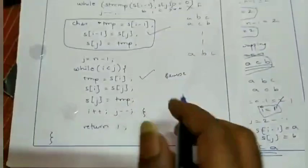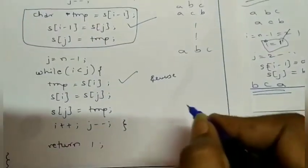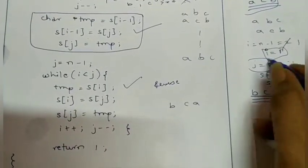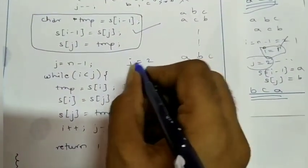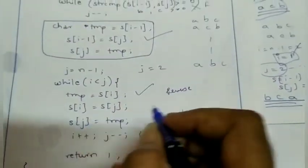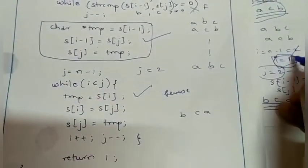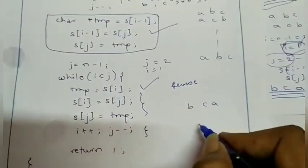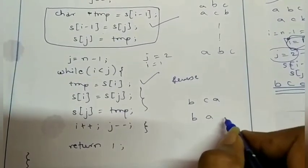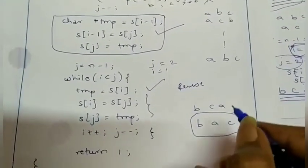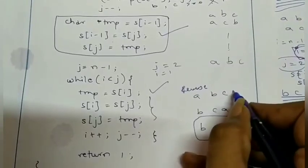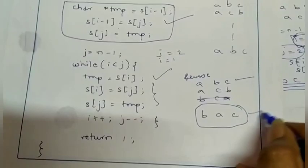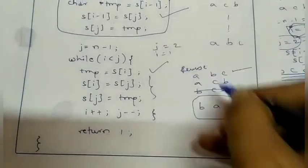After j minus 1 we have b c a. Now j equals 2 and i equals 1. After the reverse step, we get b a c — which is our next permutation. So the sequence is: a b c first, then a c b, then b a c, and so on like that.